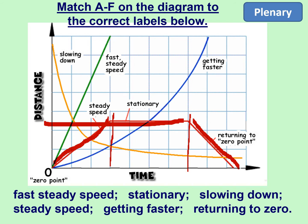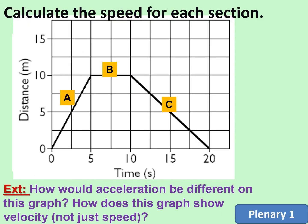Calculate the speed for each section A, B, and C. For A: 10 meters covered in 5 seconds, so 10 ÷ 5 = 2 meters per second. For B: it's a flat line on the distance-time graph, so no distance is covered between 5 and 10 seconds — speed is zero. For C: the direction has changed — 10 meters covered in 10 seconds — giving minus 1 meter per second.